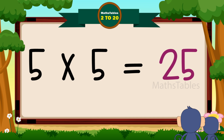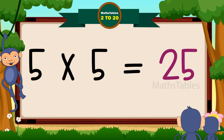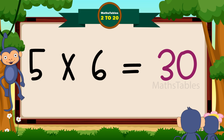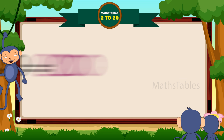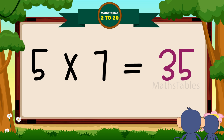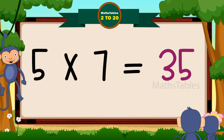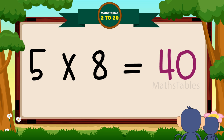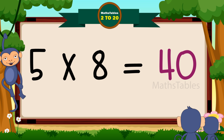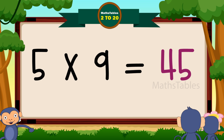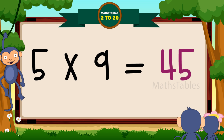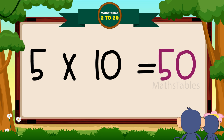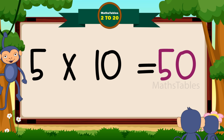Five fives are twenty-five. Five fives are twenty-five. Five sixes are thirty. Five sixes are thirty. Five sevens are thirty-five. Five sevens are thirty-five. Five eights are forty. Five eights are forty. Five nines are forty-five. Five nines are forty-five. Five tens are fifty. Five tens are fifty.